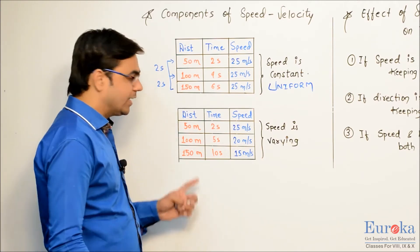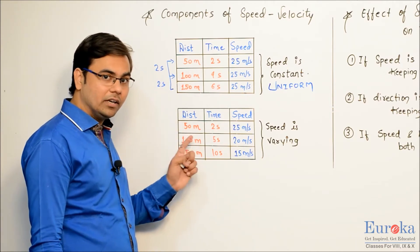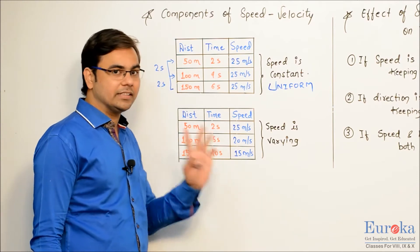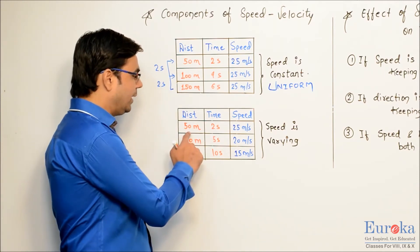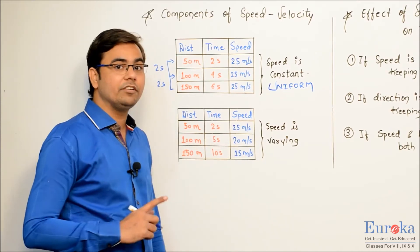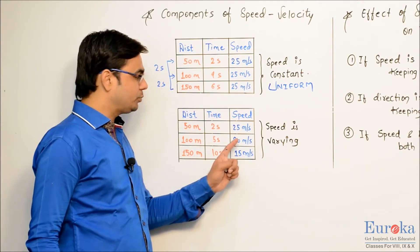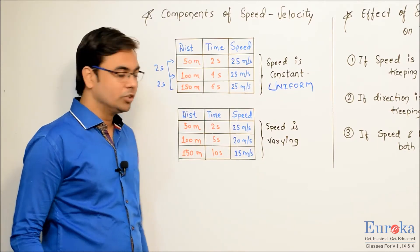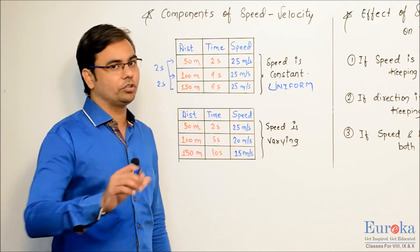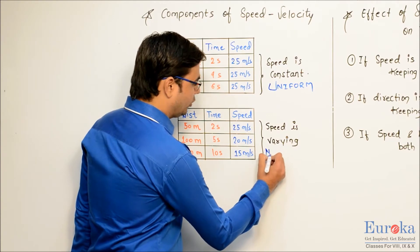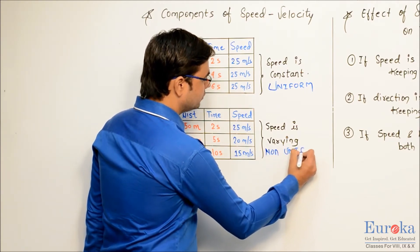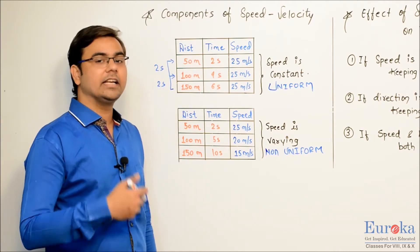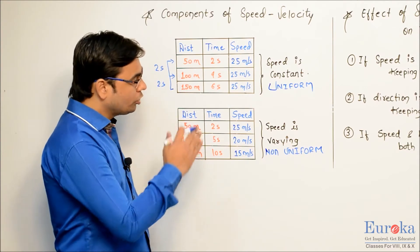In another example, the object covers 50 meters in 2 seconds, reaches the 100-meter mark in 5 seconds, and the 150-meter mark in 10 seconds. So the speeds are: 50/2 = 25 m/s, 100/5 = 20 m/s, and 150/10 = 15 m/s. The speed is varying and not constant. If the speed is not constant, we call it non-uniform speed. Whenever an object covers unequal distances in equal intervals of time, it is said to be in non-uniform motion.